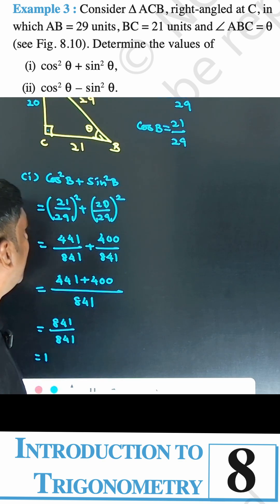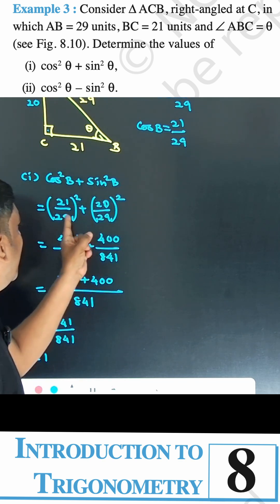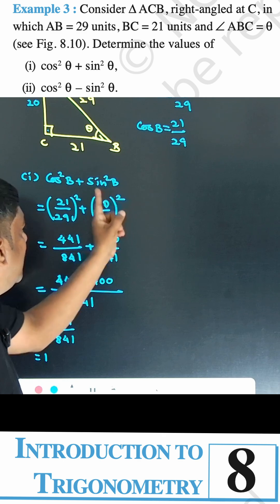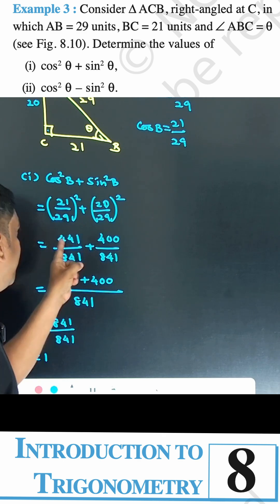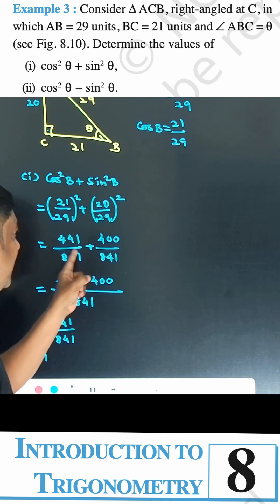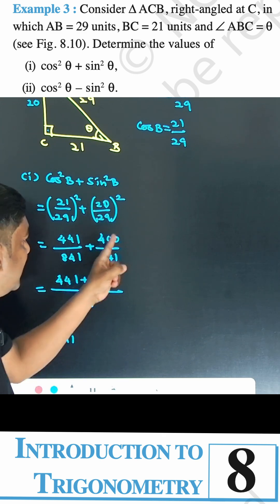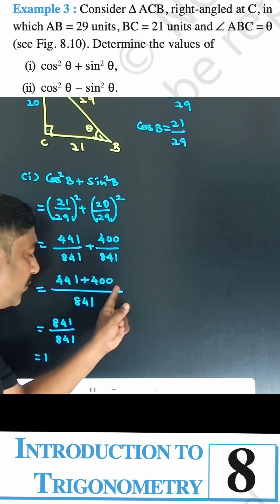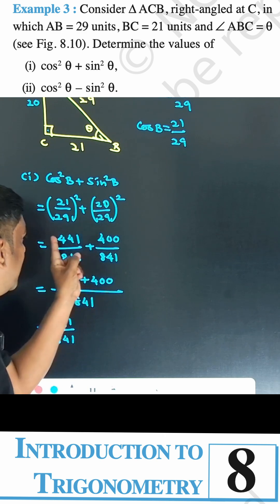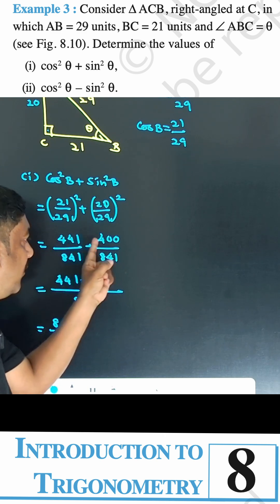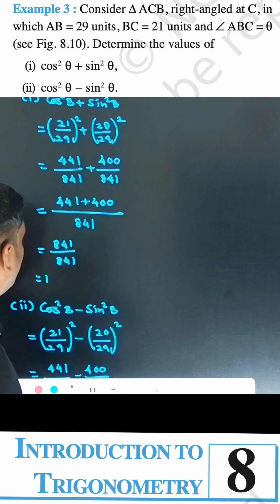First, cos²B plus sin²B. Cos²B is equal to (21/29)², which is 441/841. Sin²B is equal to (20/29)², which is 400/841. The denominator is 841. Adding the numerators: 441 plus 400 is 841. So 841 divided by 841 is equal to 1.